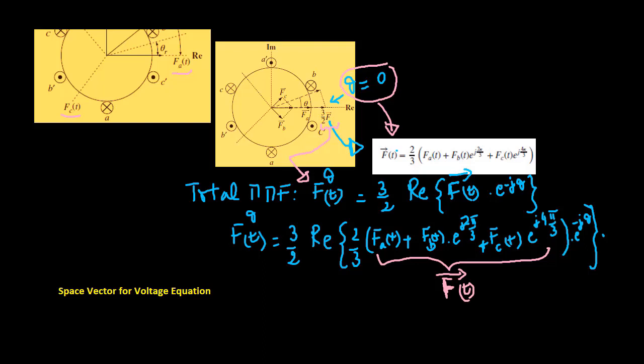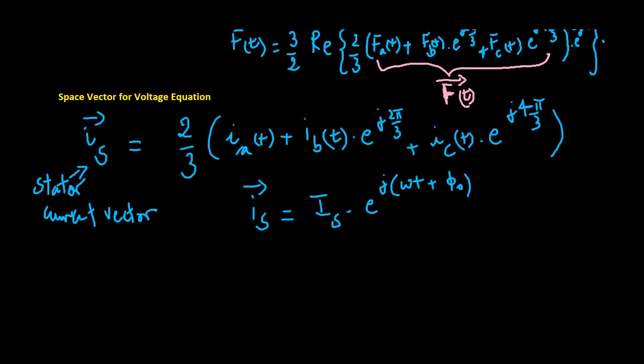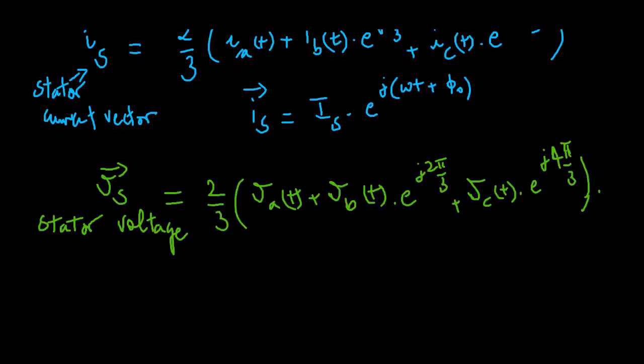Use of space vector facilitates the derivation of voltage equation for the PMSM with a compact expression. This derivation is the key to form the dynamic model for current control. With a similar principle, the space vector for three phase stator current can be written, and the space vector of three phase stator voltage is defined.